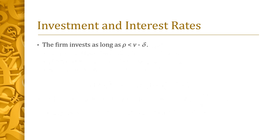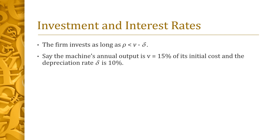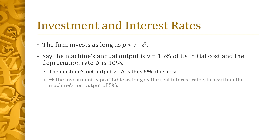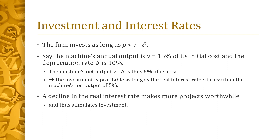In other words, the project is worthwhile as long as the real interest rate rho is less than the machine's net output, which equals its gross output v less its depreciation rate delta. For instance, if the machine's annual output is worth v equals 15% of the machine's initial cost and the depreciation rate delta is 10%, the machine's net output v minus delta is 5%. The investment is worthwhile as long as rho is less than 5%. A decline in the real interest rate rho thus makes more projects worthwhile and stimulates investment.